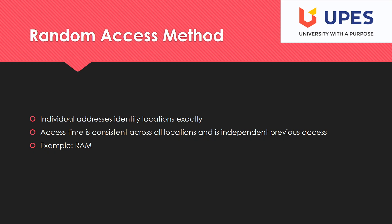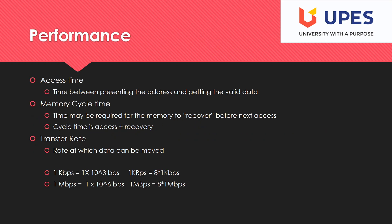The third is the random access method, in which individual addresses identify the location exactly. You can reach a particular location with zero time — meaning every location is equally accessible, requiring equal amounts of time. Your RAM is one such example, known as random access memory, because you can access any block inside RAM with equal access time.